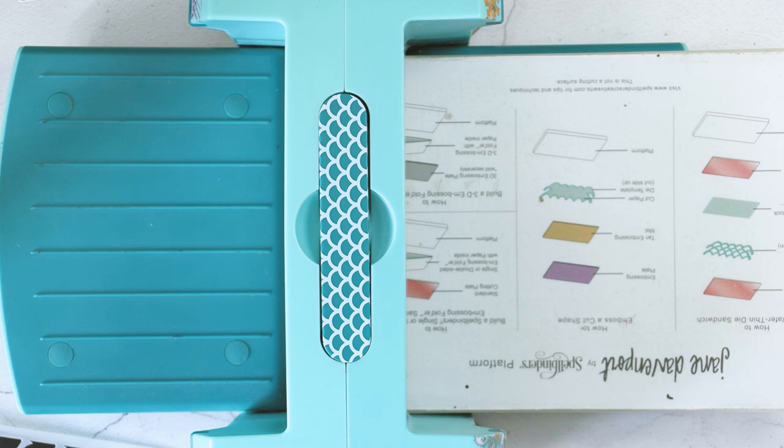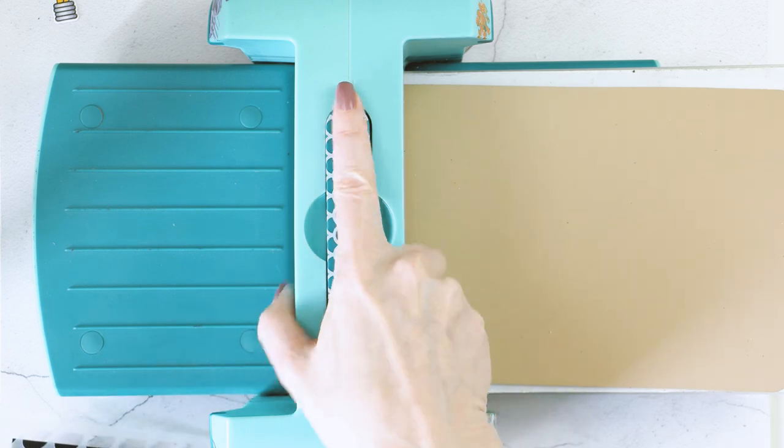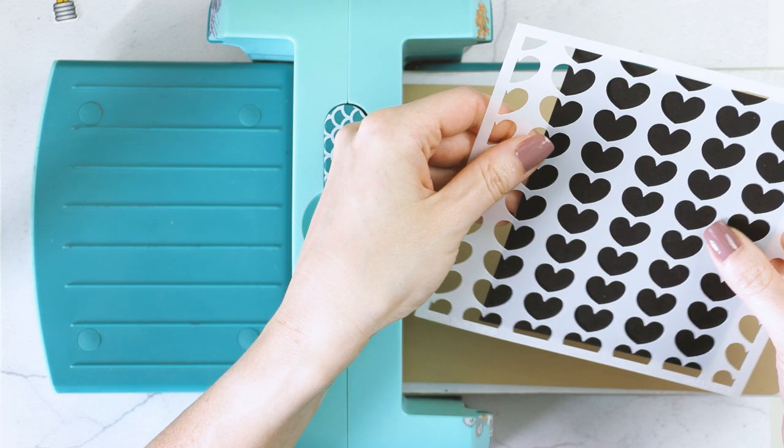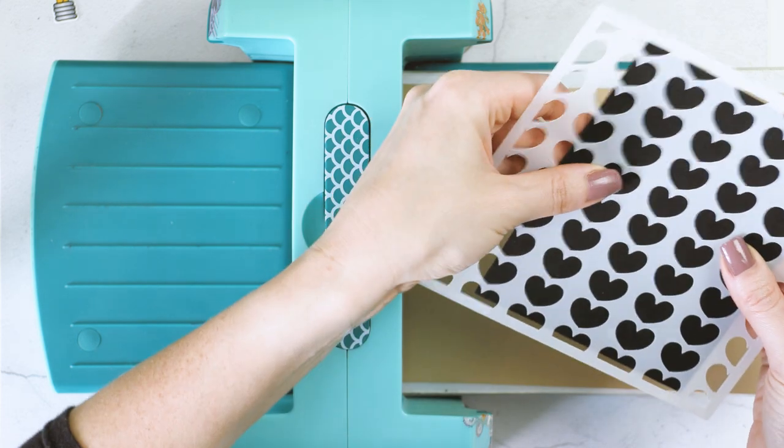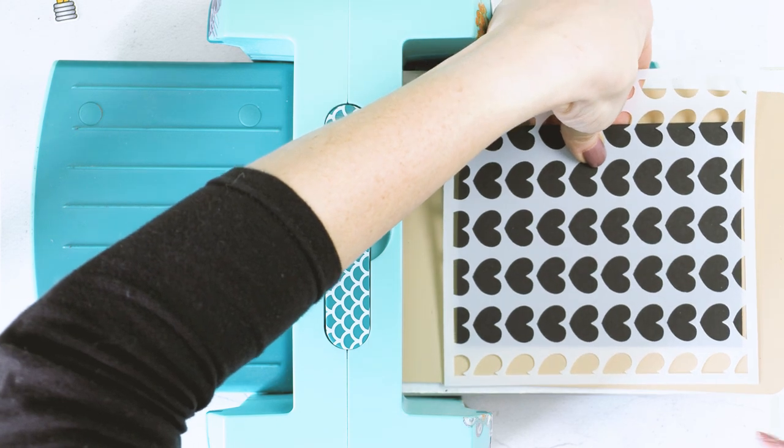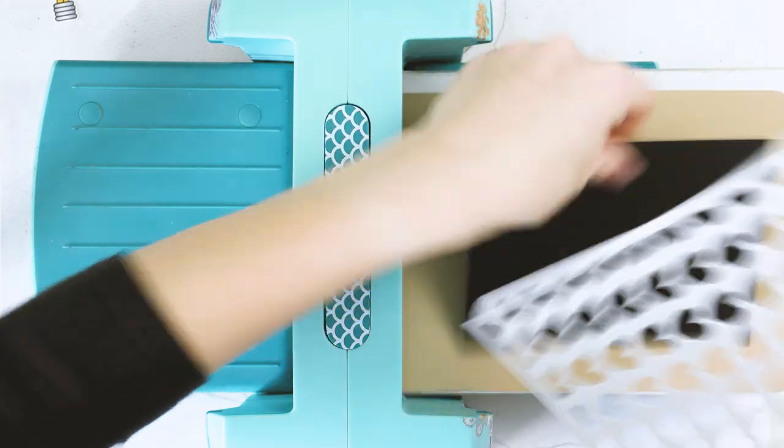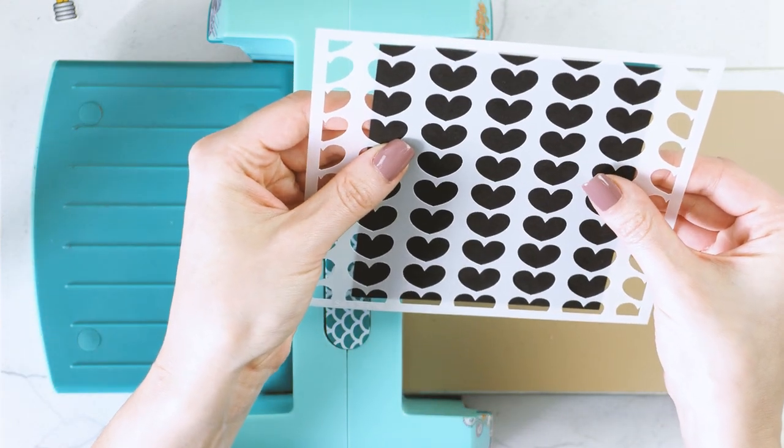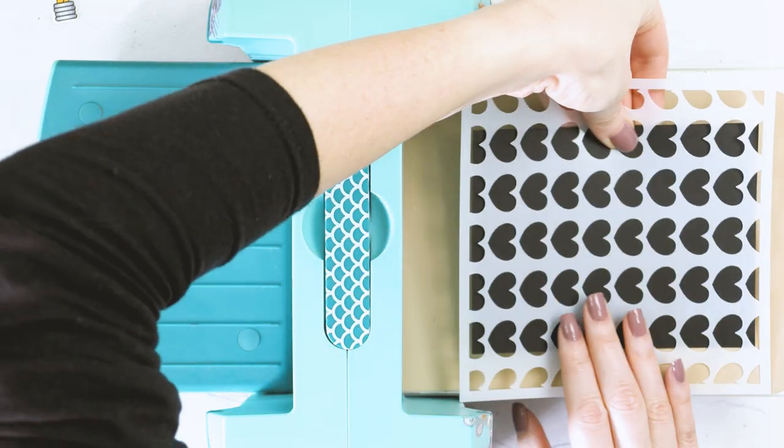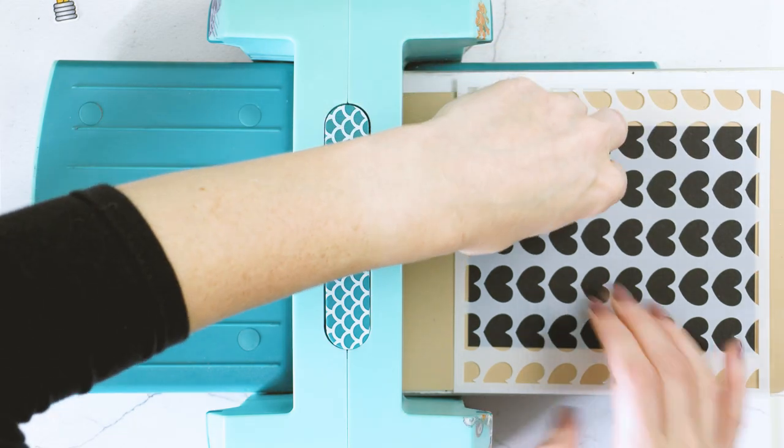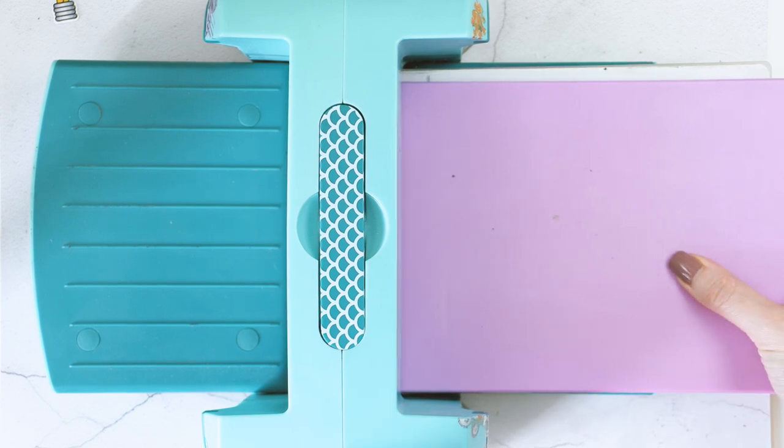You're going to need to use your die cutting machine and an embossing mat. I'm using Spellbinders Platinum 6 machine. This particular one is Deep Sea die cutting machine, but it's the same as the Platinum 6. And you can do this stencil dry embossing in any other die cutting machine. Just check the instructions manual for your specific machine. I have here the base platform. I've placed the tan embossing mat. Next, I've aligned the paper and the stencil and placed both onto the mat and covered it all up with an embossing plate.